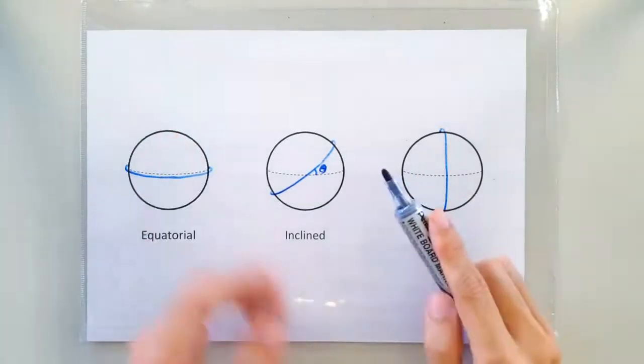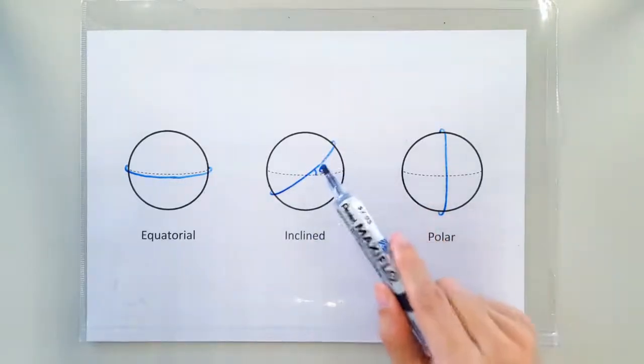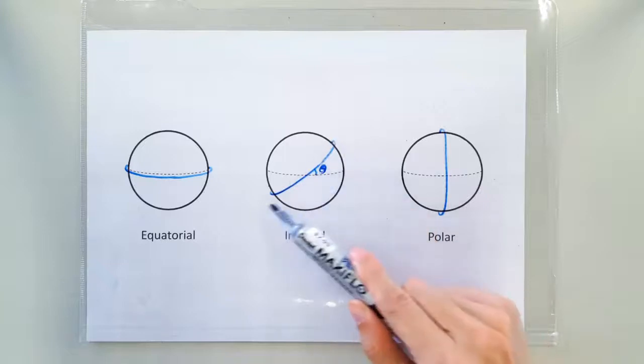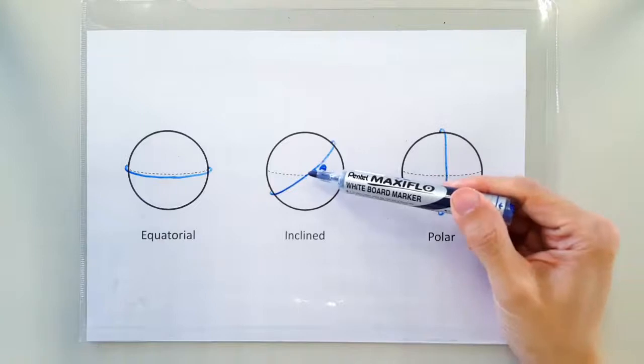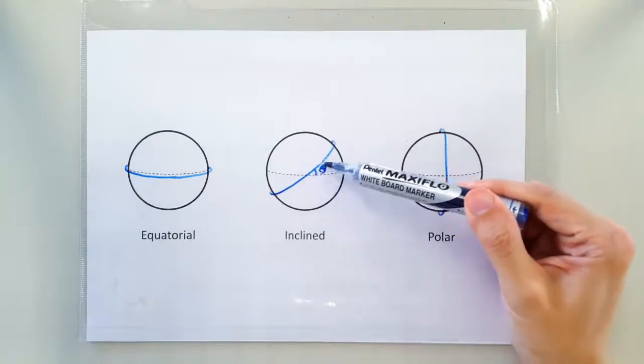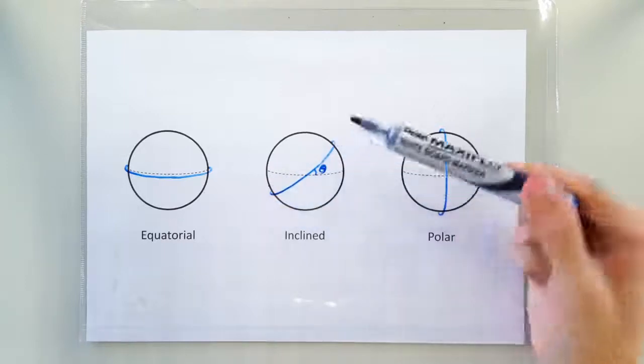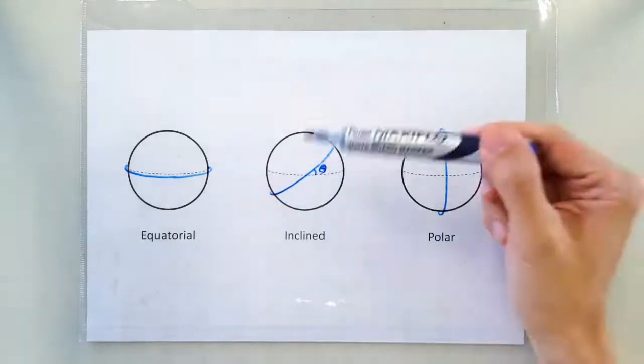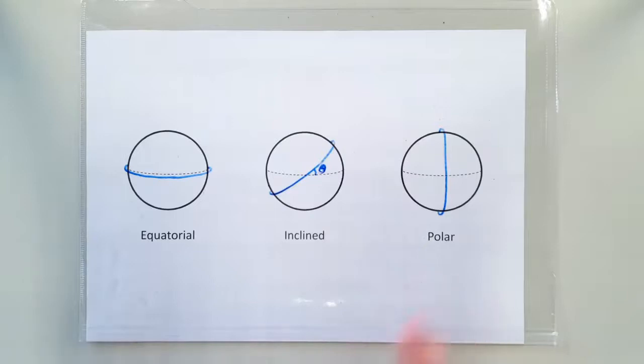Now you can't be geostationary if you are in any other inclined orbit. So even if you arrange for the satellite to do one round every 24 hours, you'll see that it does not remain at the same latitude. You can see it climbing up and down the latitudes. So from the point of view of the Earth, you'll see a satellite that goes north and then south and then north and then south. So it's not geostationary.